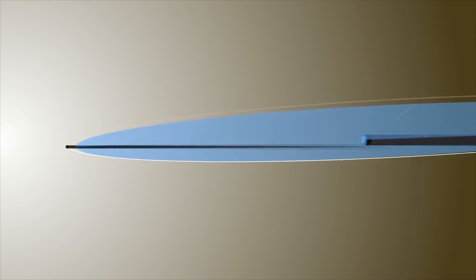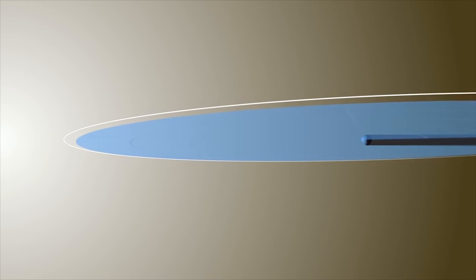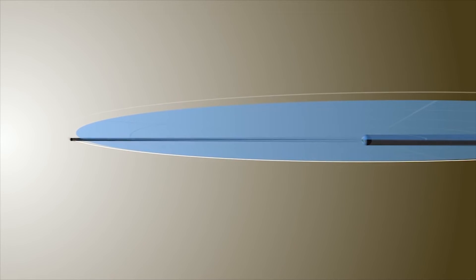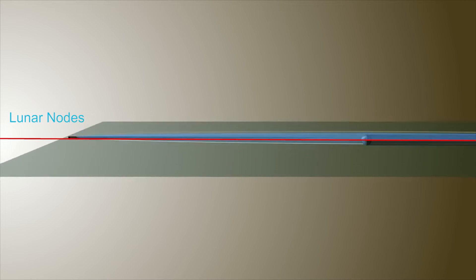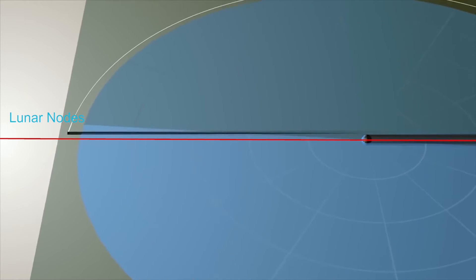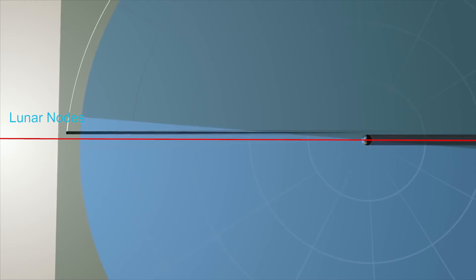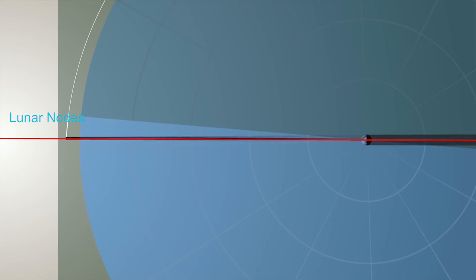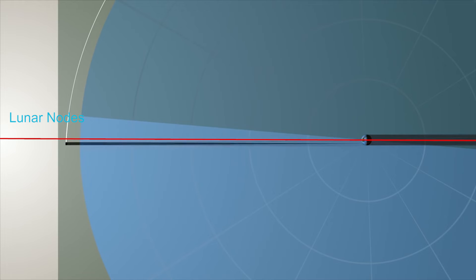There are times when the inclination of the Moon's orbit and the ecliptic intersect. These intersections are called lunar nodes. It is during this intersection, coupled with the alignment of the Sun, Moon and Earth, that produce a solar eclipse.